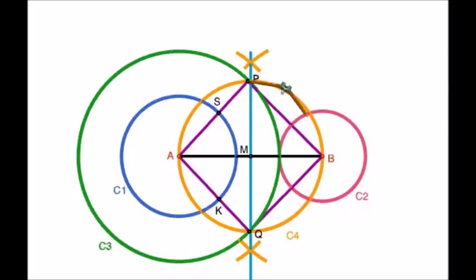Now with radius equal to line PB and center S, draw an arc which cuts the circle C2. Let this point be T. Similarly, with radius equal to QB and center K, draw an arc which cuts the circle C2. Let this point be L.